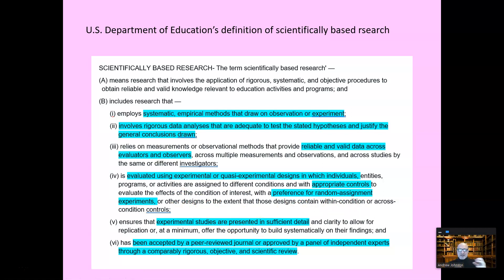Experimental, true experiment, has the subjects randomly assigned to control and experimental groups. We can't do that in education because students are in classrooms. So we use what's called quasi-experimental designs, which means that you keep them in their groups, but you use some pre-test measure to determine that the groups are equal. Experimental studies are presented in sufficient detail. We can repeat them. We know exactly what you did. And here's the one, been accepted by a peer-reviewed journal or approved by a panel of independent experts. I don't like that because what is an expert? Comparably rigorous, objective, and scientific review. That is important.